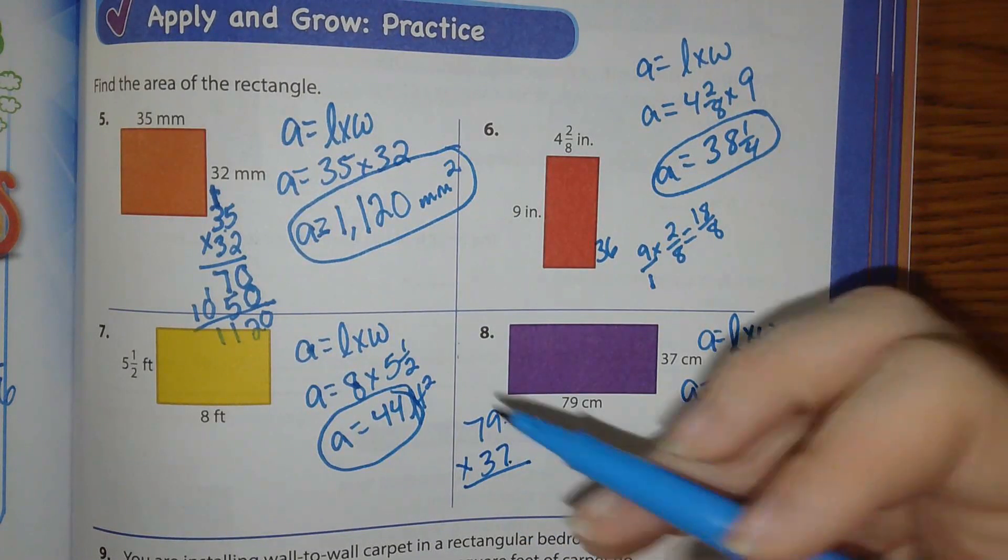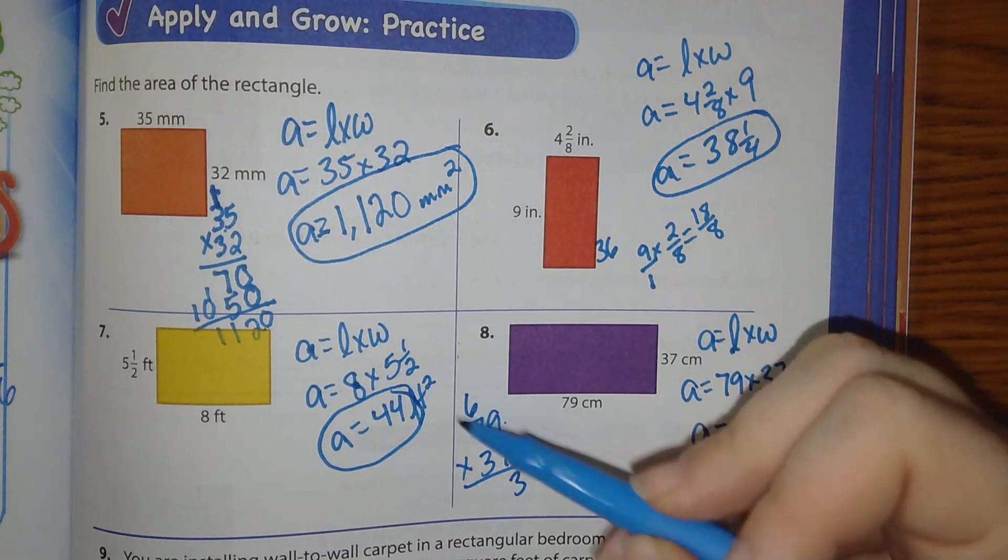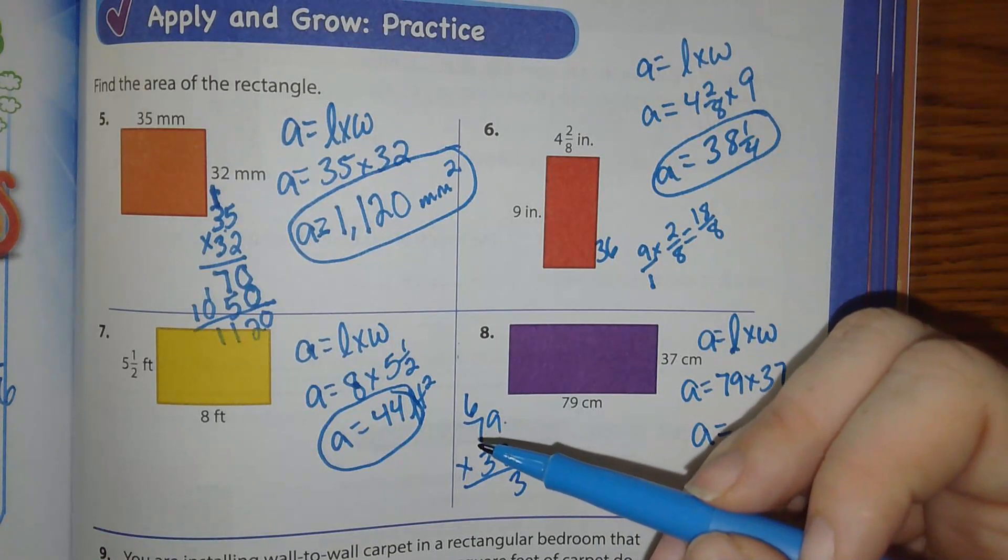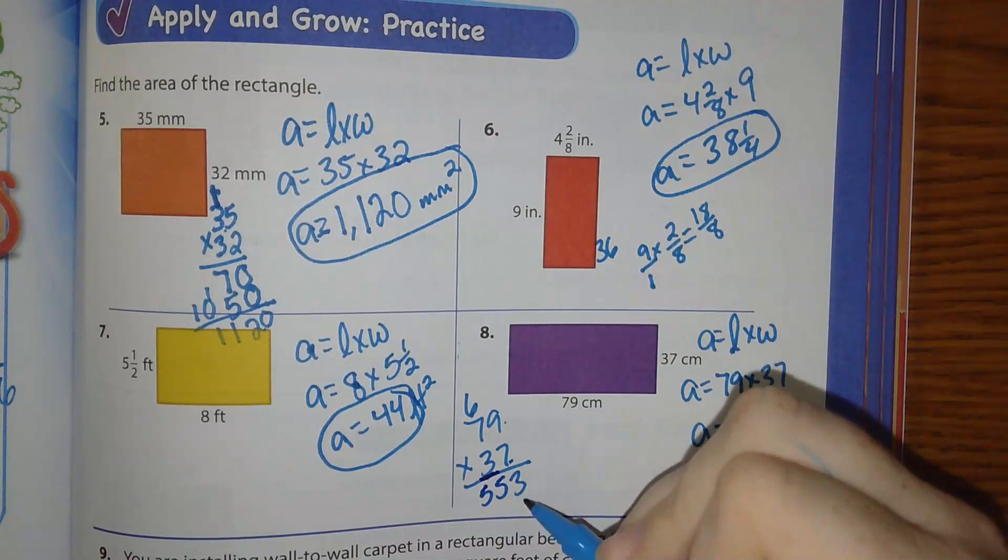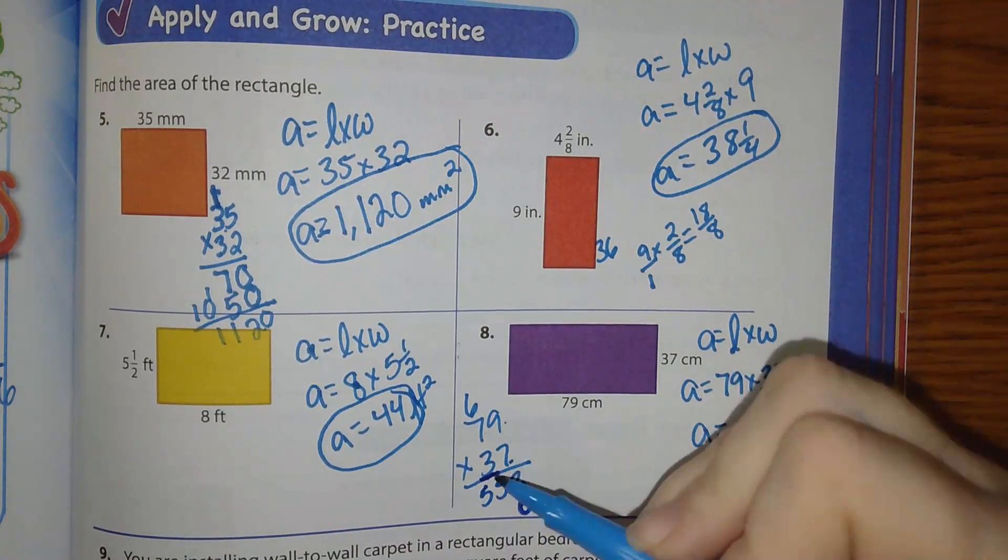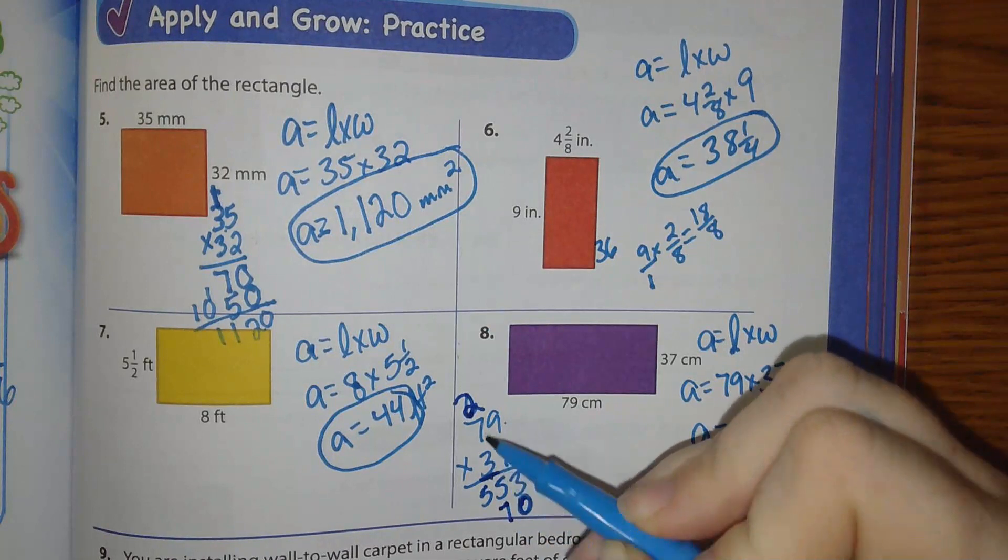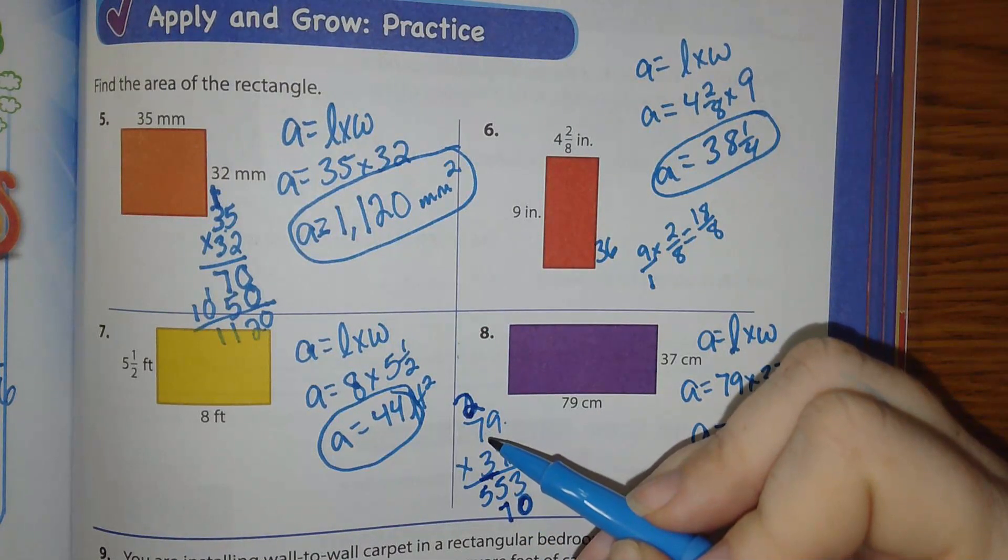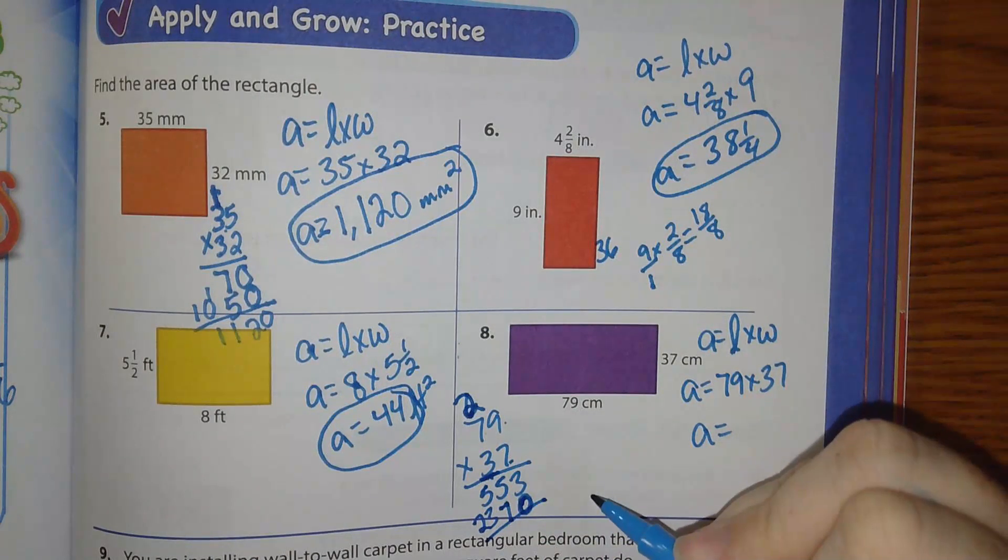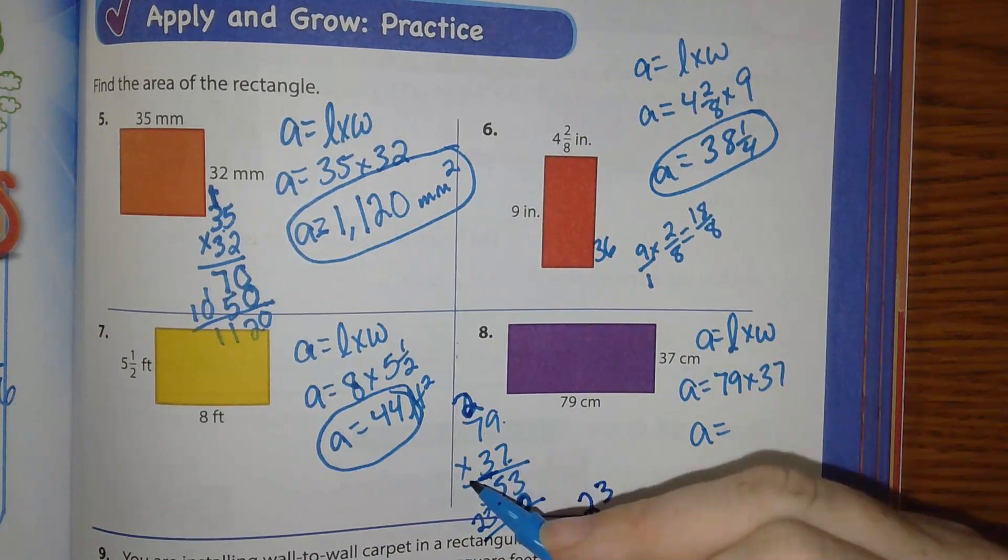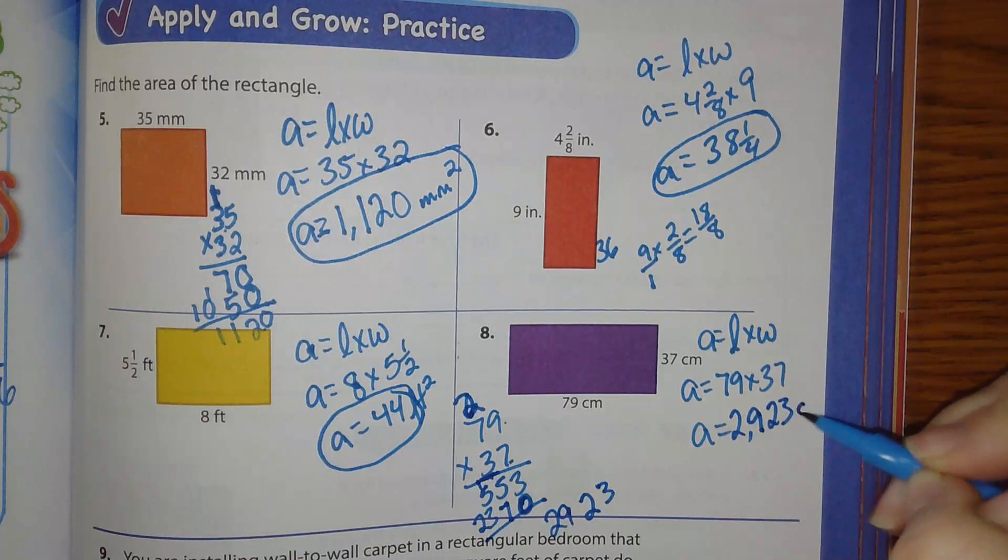7 times 9 is 63. 7 times 7 is 49. You have to add that 6. So that is 55. We're going to move over to the 3 and put a 0 because we have to hold that place value. 3 times 9 is 27. 3 times 7 is 21. 21 plus 2 is 23. Add those together and you get 2,923 centimeters squared.